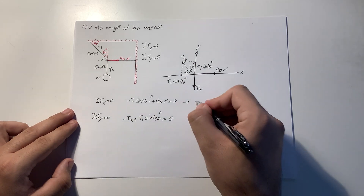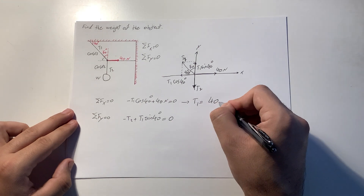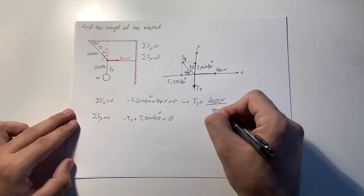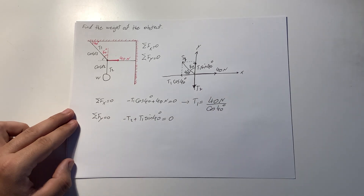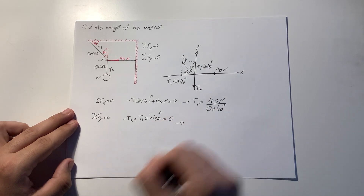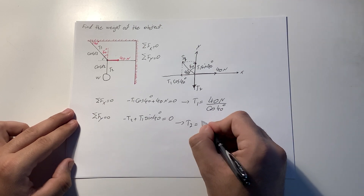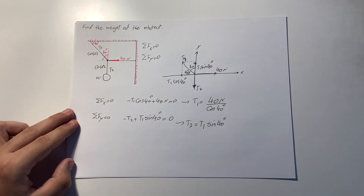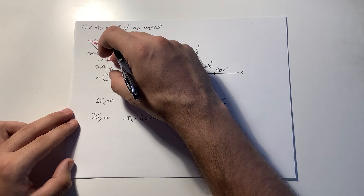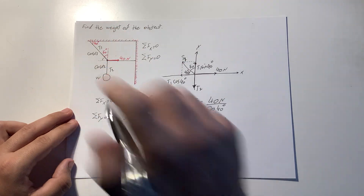From the x-direction equation, we can find that T1 equals 40 Newtons divided by cosine of 40 degrees. From the y-direction equation, T2 equals T1 sine of 40 degrees. And we know that T2 equals the weight of the object.